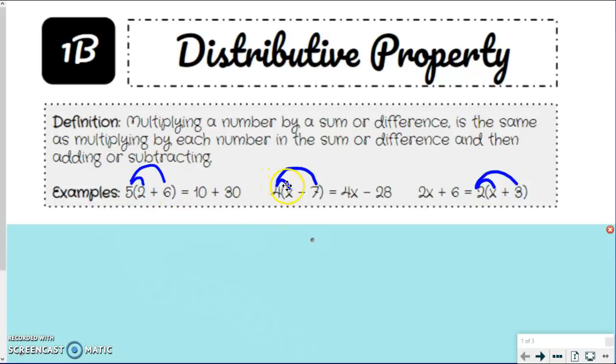Same thing down here. Four times x to get 4x, four times seven to get 28, and I'm just keeping that subtraction sign in there. Here's another one where two times x gives me 2x, two times three gives me six. So these are equivalent.